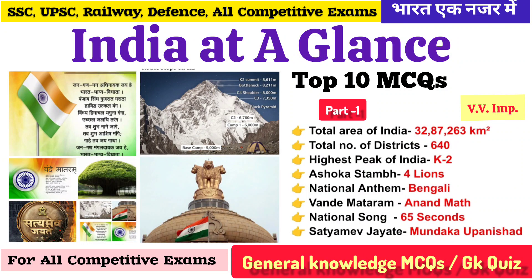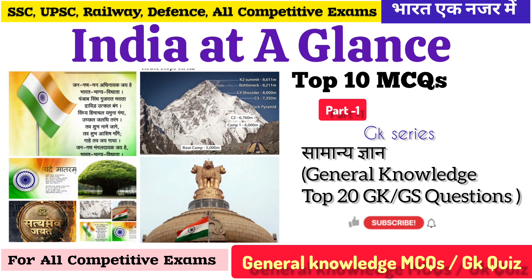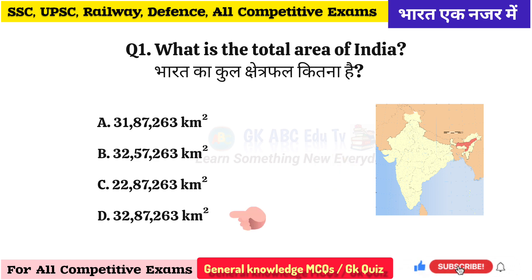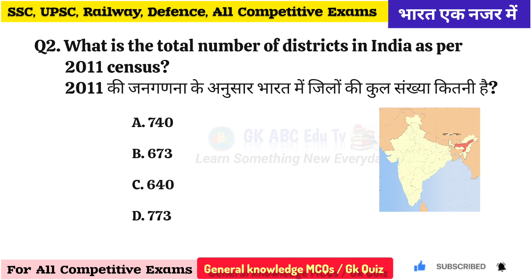India at a Glance — Bharat ek nazar mein. Top 10 MCQs for All Competitive Exams. What is the total area of India? 32,87,263 km². What is the total number of districts in India as per the 2011 census?